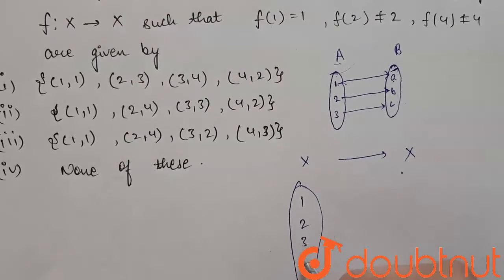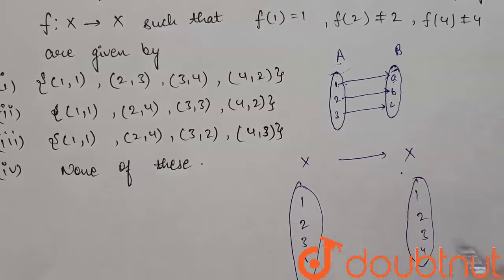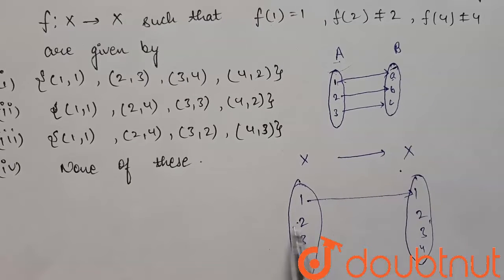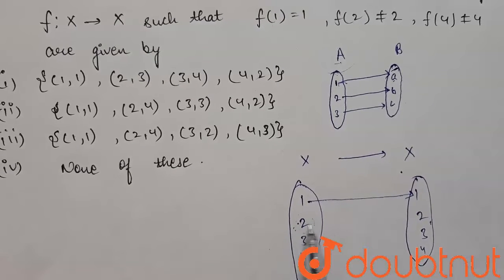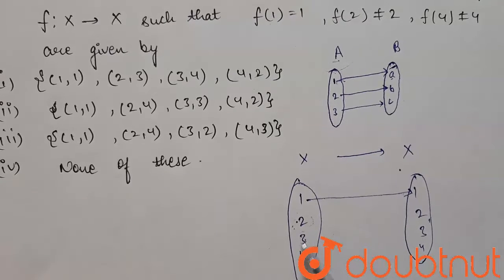Here also we are having 1, 2, 3, and 4. It is given that 1 is having 1. The value of f(2) is not equal to 2. So if we will put the value of 2 here, then the options in this part are 3 and 4.